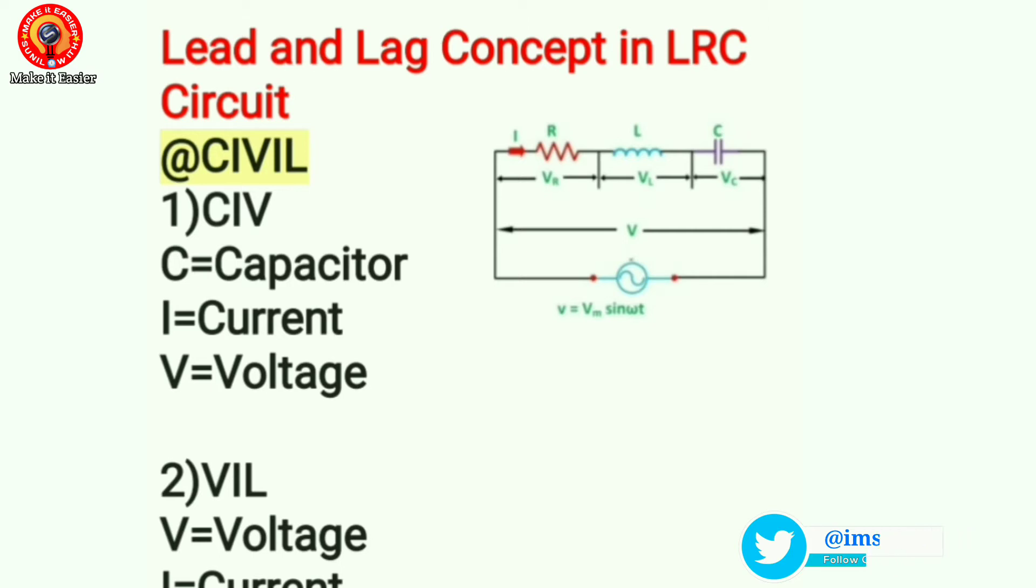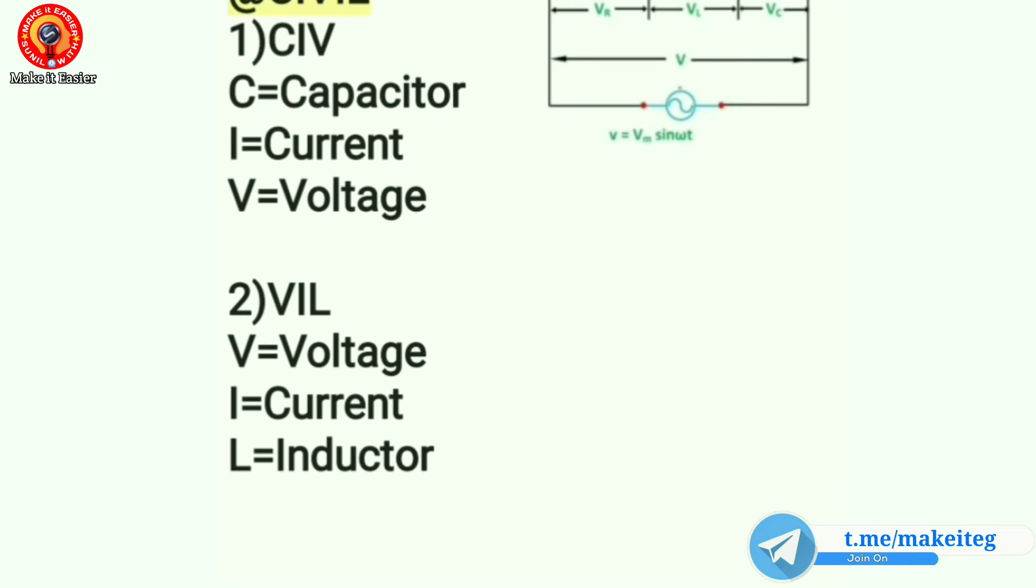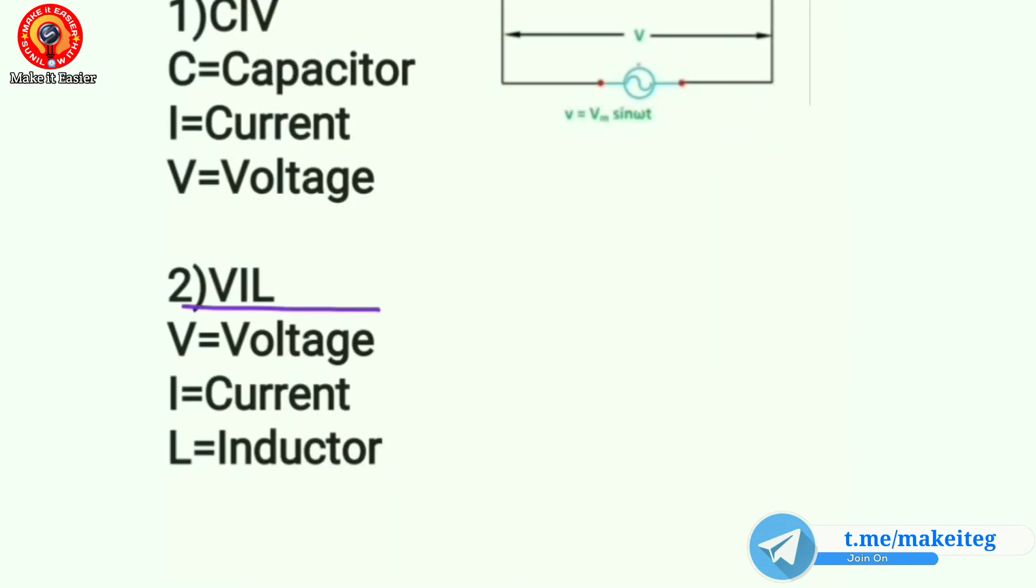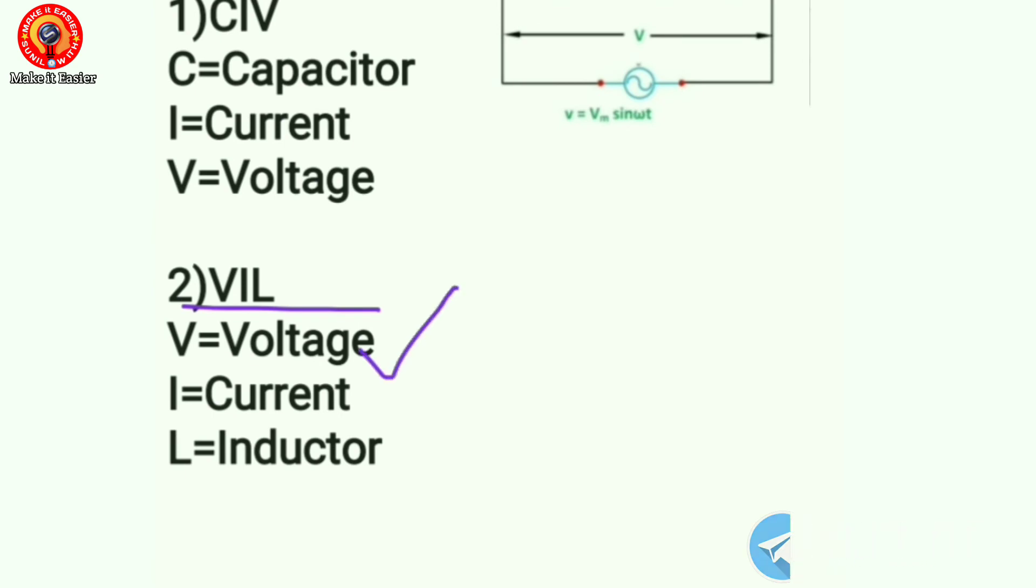For the RL circuit, we should take VIL, that is the last three terms, where V stands for voltage, I stands for current, and L stands for inductor.